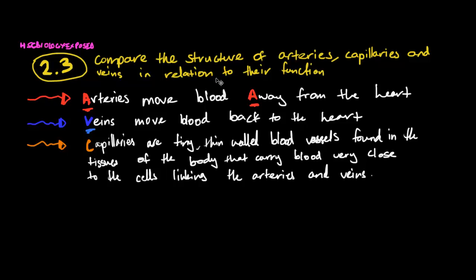So arteries, they're a blood vessel and they move blood away from the heart. So as you can see I've highlighted A and I've highlighted the other A here. So as you can see they move blood away from the heart. Then you have veins. Veins move blood back to the heart. And then capillaries, they're basically tiny thin walled blood vessels found in the tissues of the body that carry blood very close to the cells linking the arteries and veins.